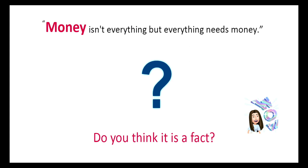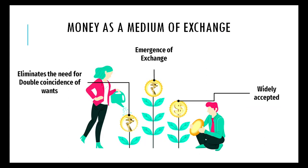Money isn't everything, but everything needs money. Money became a medium of exchange because there was a need to exchange products and services. Money eliminates the need for double coincidence of wants. Double coincidence of wants means that two people would require the same thing at the same time — like if I need wheat and another person wants to sell shoes, I should be needing shoes and the other person should be willing to sell me wheat.